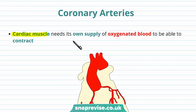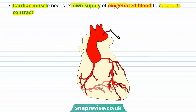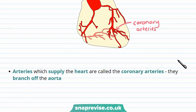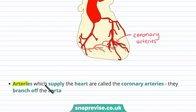The cardiac muscles in the heart need their own supply of oxygenated blood to be able to contract, because they need oxygen for aerobic respiration. The aorta carries oxygenated blood around the body, and the coronary arteries branch off the aorta to supply the heart itself.